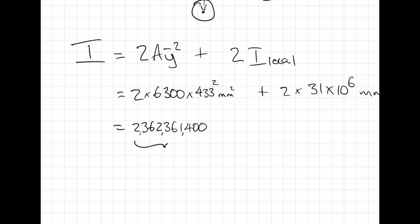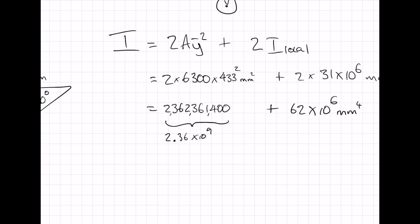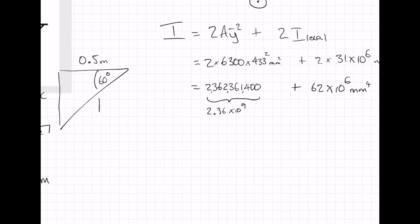So this gives us 2.36 times 10 to the 9 plus 62 times 10 to the 6. The local I contribution is actually very small — about a thirtieth of the size. So I of the system is equal to 2.424 times 10 to the 9 millimeters to the 4.